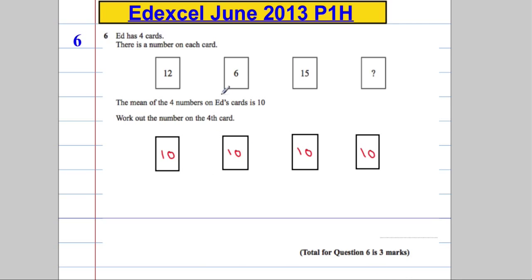That means that the total is 40. So the total equals 4 times 10, and 4 times 10 is 40. So we know the total.